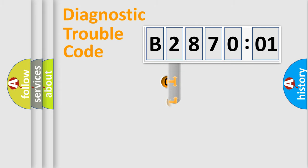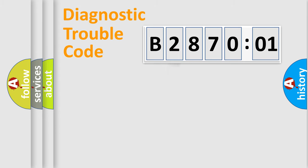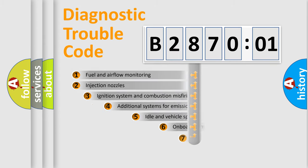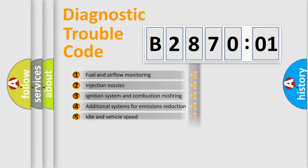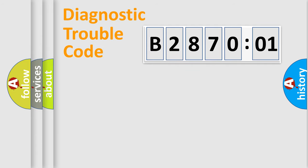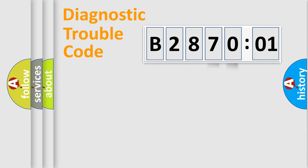This distribution is defined in the first character of the code. If the second character is expressed as zero, it is a standardized error. In the case of numbers 1, 2, or 3, it is a manufacturer-specific error expression. The third character specifies a subset of errors. This distribution is valid only for the standardized DTC code. Only the last two characters define the specific fault of the group.